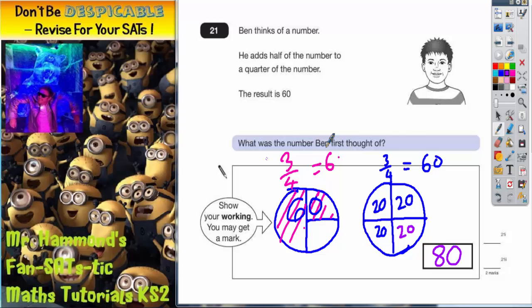What was the number Ben first thought of? It must have been 80. Let's just go through that again to double check it makes sense. Ben thinks of a number. If this was 80, he adds half of his number—half of his number would be 40—to a quarter of his number. Well, a quarter of 80 would be 20.